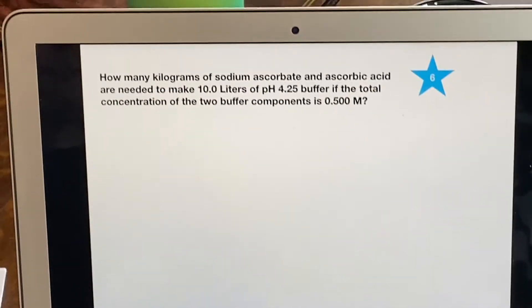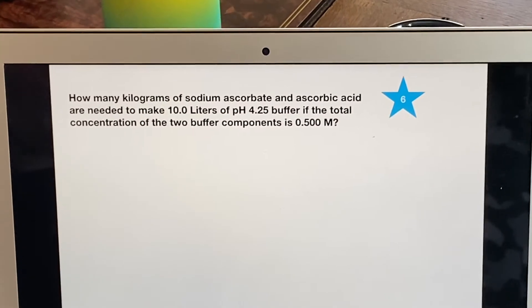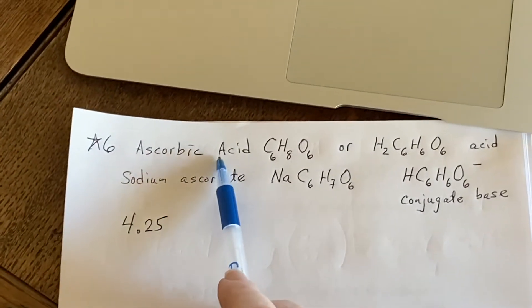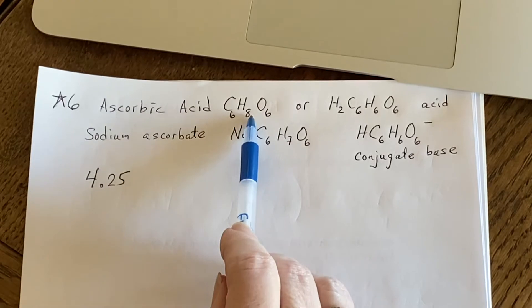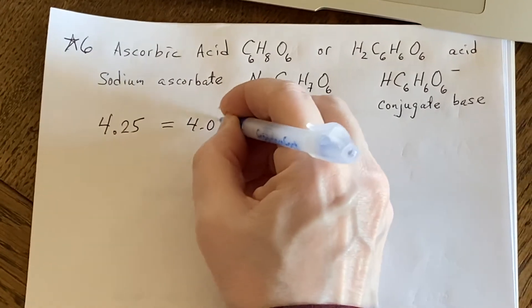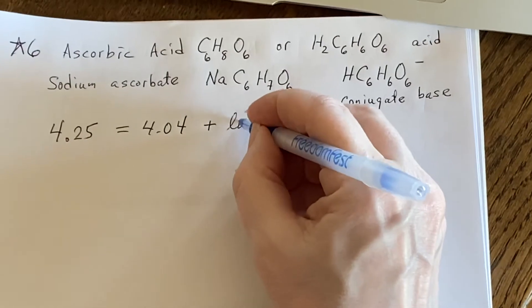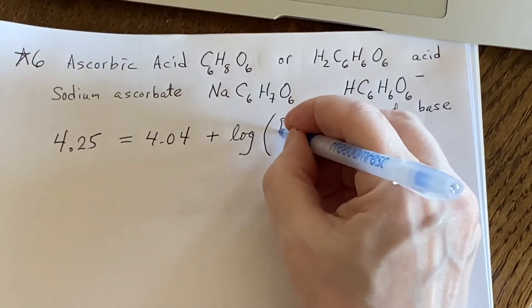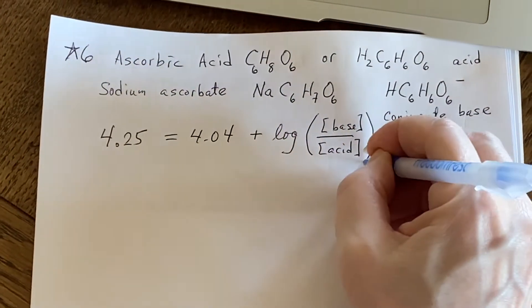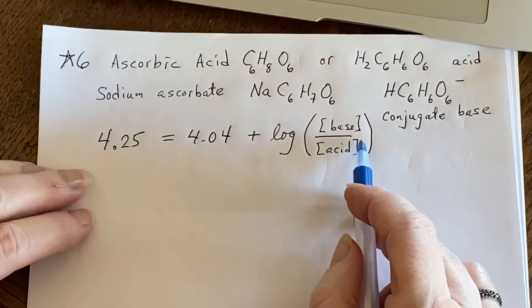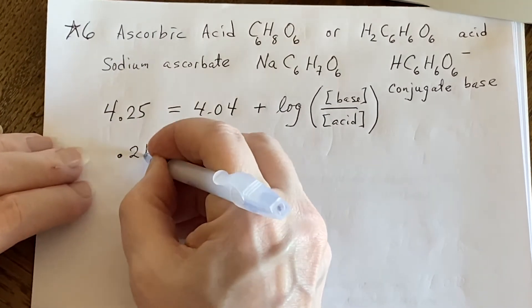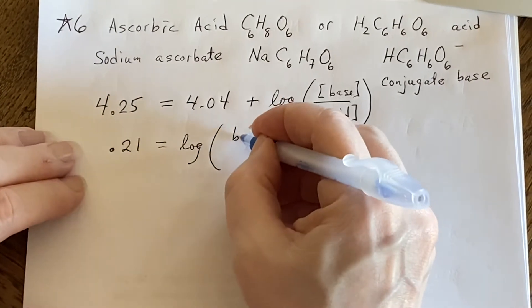Now, what else do I know? I know that I want to make a pH of 4.25. Well, apparently they're leaving us to go look up what the pKa is of ascorbic acid. When you do go look it up, you find out that it's 4.04. And to complete the Henderson-Hasselbalch equation here, it's going to be the logarithm of the base concentration over the acid concentration. At this point, I can say, if this is supposed to be true, then 0.21 must be this logarithm of the base over the acid.